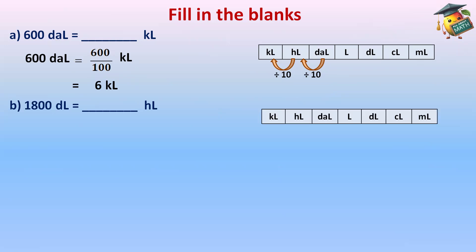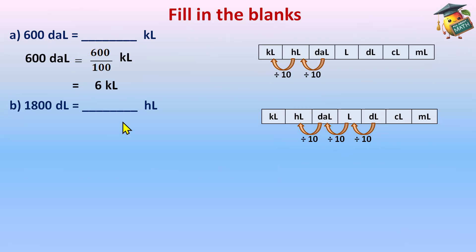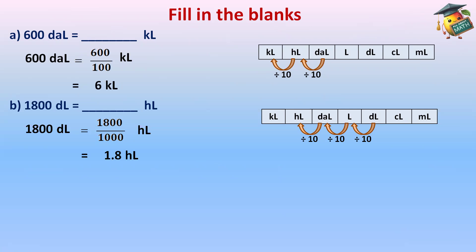Part E: 1800 deciliters equals how many hectolitres? Make the chart. Deciliter is here, hectolitre is here — we are moving backward, from right to left. First: deciliter to liter; then liter to decalitre; then decalitre to hectolitre — three steps, divide by 10 each, so divide by 1000. 1800 ÷ 1000: the decimal shifts three places to the left, giving 1.8 hectolitres.